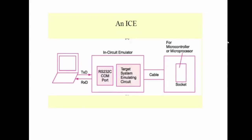The 8085 simulator mimics the microprocessor — all internal registers are available, including the program counter, stack pointer, A register, B register, C register, D register. The memory is also visible on screen, starting from address 4000 to 4F. After executing the first instruction MVI A, 07, you can see the accumulator register now contains 07. After executing the second instruction MVI B, 08, the B register will contain 08.